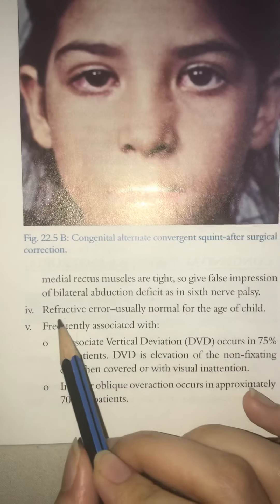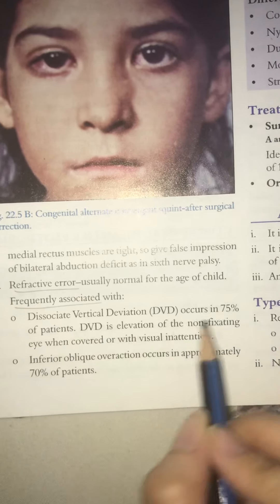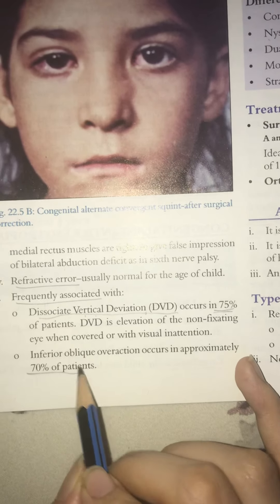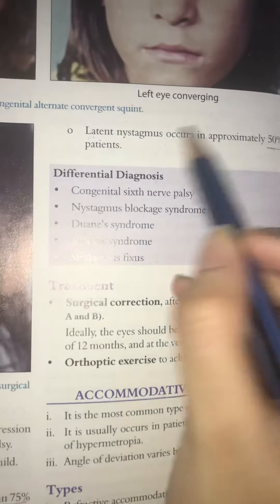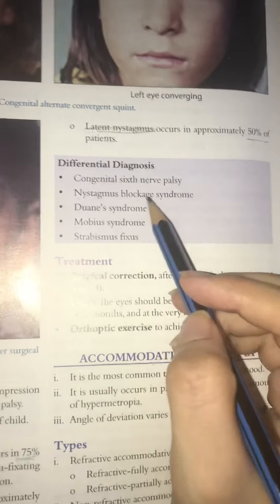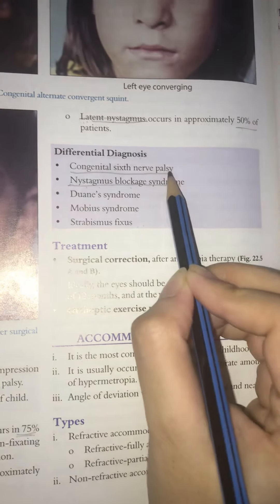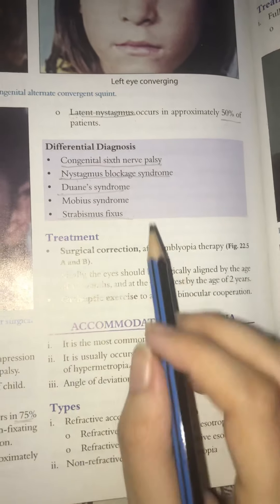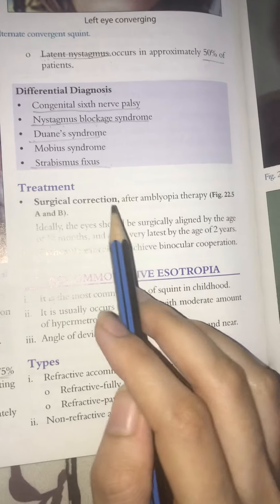Refractive error is typically normal in congenital esotropia. Associated features include dissociative vertical deviation in 70% of patients, inferior oblique muscle overaction in about 50% of cases, and latent nystagmus. Differential diagnoses include nystagmus blockage syndrome and congenital 6th nerve palsy.